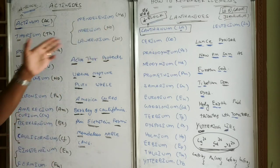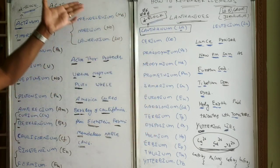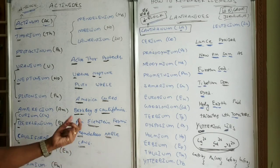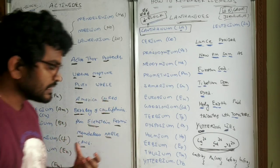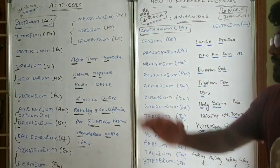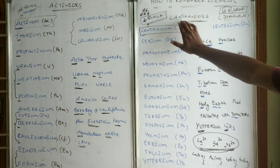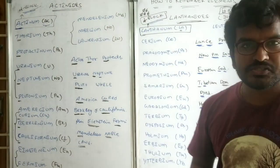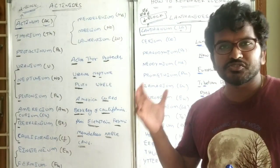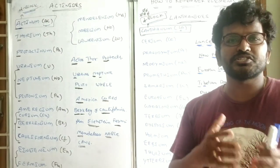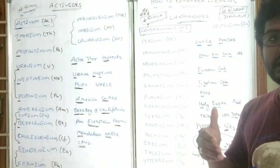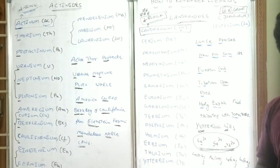Like this you can remember this lanthanide series elements and actinide series elements very effectively by using these two mnemonics. That is the thing about how to remember the lanthanide elements and actinide elements. Dear friends, if you like this video, please like the video and share it with your friends, and subscribe to my channel for more notifications. Thank you.